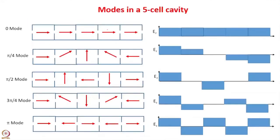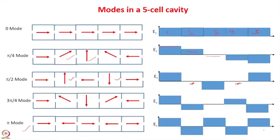We can now see the relative magnitude of the field in the 5 cells. For the 0 mode the magnitude is the same in all cells. For the π/4 mode, the magnitude is maximum in the first cell, then reduced due to the π/4 phase shift; the third cell is unexcited, and subsequent cells have fields in the opposite direction. For the π/2 mode, every alternate cell is unexcited. For the π mode, the fields in adjacent cells are in the opposite direction.